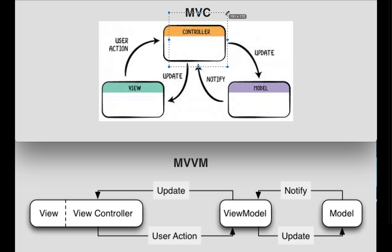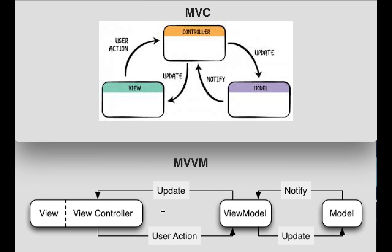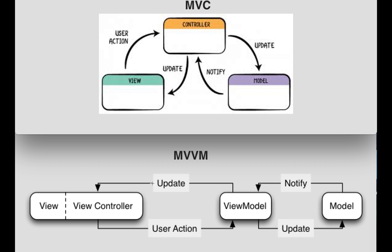The view model sends data back to the view controller and those things are displayed on the view. Whatever things we were doing inside the controller previously are now going to happen inside the view model. Because of that, our view controller will be very lightweight and we can easily find bugs, with no need to modify a huge amount of code because all the components are loosely coupled.